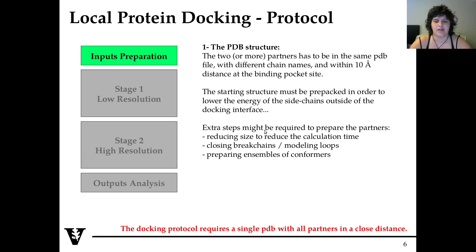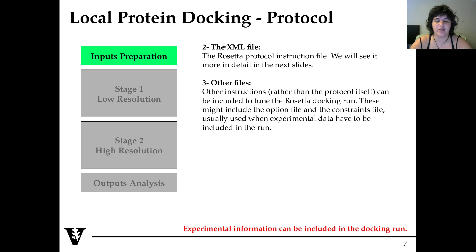You can also require extra steps: for example, you may need to reduce the size of one protein to reduce calculation time. You may have chain breaks to close or loops to model, or you may want to prepare an ensemble of conformers to increase accuracy. So there are many things you will need to do before doing the actual docking, especially for the PDB preparation. Other things you need as input include the XML file. There are also additional files you may need to tune the Rosetta docking run, such as the option file or constraints if you have experimental data.